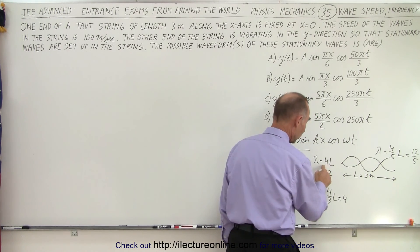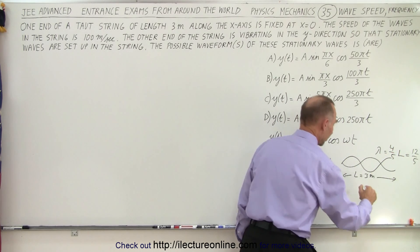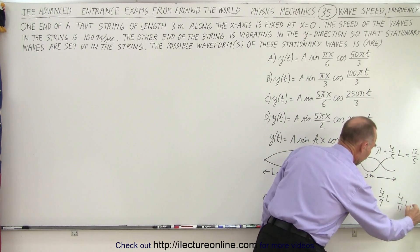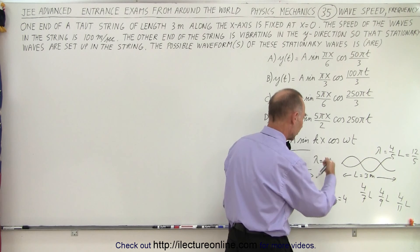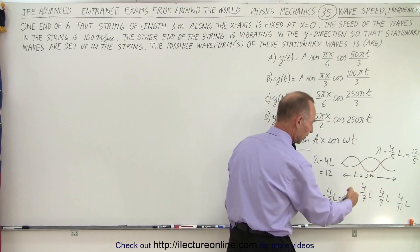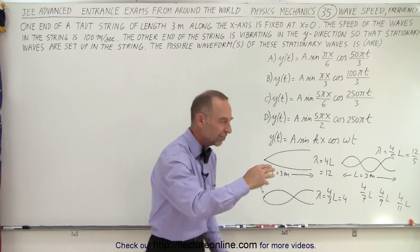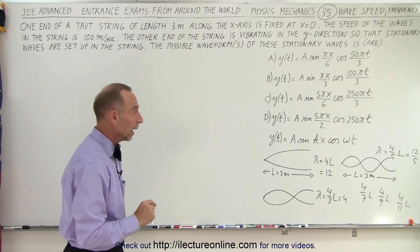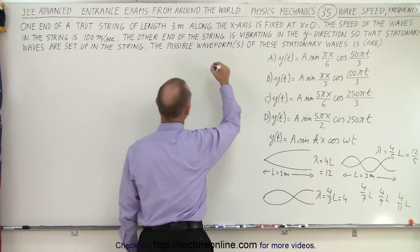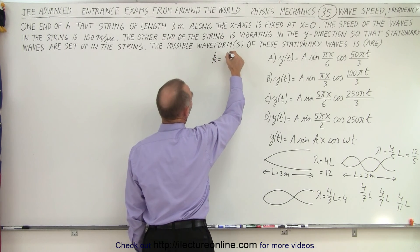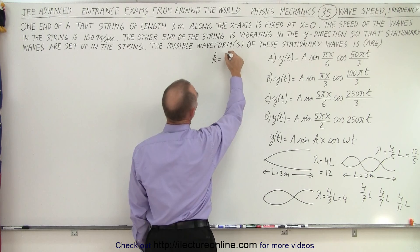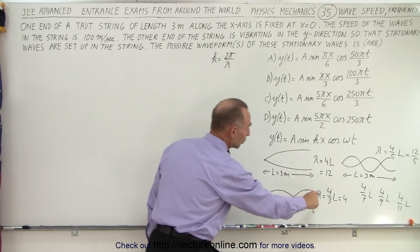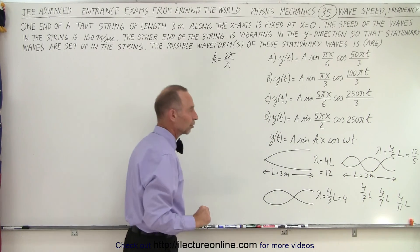The pattern of wavelengths is: 4L, 4/3 L, 4/5 L, 4/7 L, 4/9 L, 4/11 L, and so forth. You can see the pattern goes 4/1, 4/3, 4/5, 4/7, 4/9, 4/11 times L as you have more and more vibrational modes. This takes care of k, because k equals 2π/λ, and λ is defined by these vibrational modes.